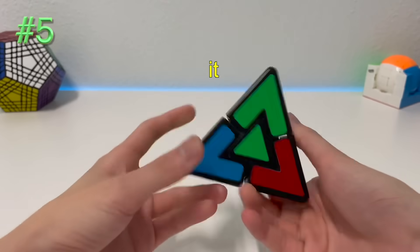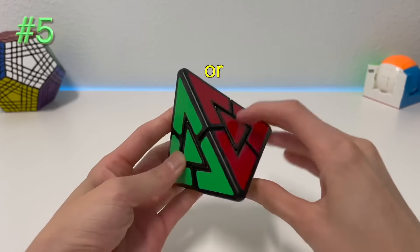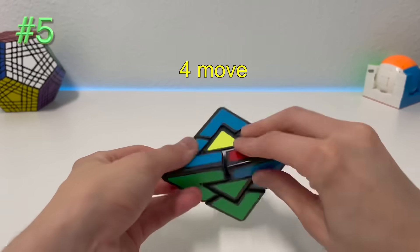Number five, the pyramid duo. It is always four moves or less away from being solved, or eight moves max with learning one simple four-move algorithm.